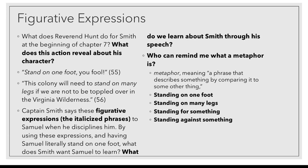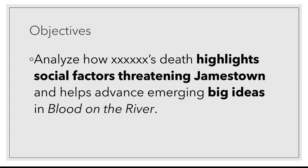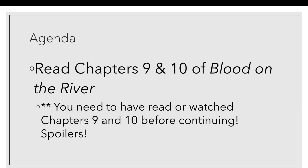If that doesn't make sense, make sure to leave me a comment and let me know that we need to go over metaphors a bit more. Now that we're done with our review of figurative language, our objective for today is to analyze how someone's death highlights the social factors that threaten Jamestown and help advance some emerging big ideas. You need to have read chapters 9 and 10 of Blood on the River, or listened to them on YouTube, before continuing this lesson — otherwise, please hit pause and come back when you're ready.